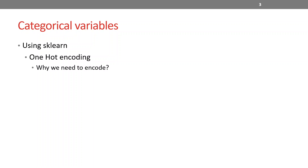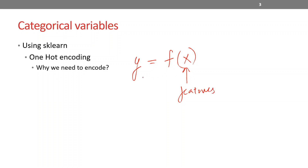Remember, we are trying to build a relationship between the dependent variable y, such that it is a function of x, because x — which is features or independent variables — influences my dependent variable. I'm trying to derive this relationship somehow, but I know that this feature vector has certain categorical variables. Let's go back and see what those are.